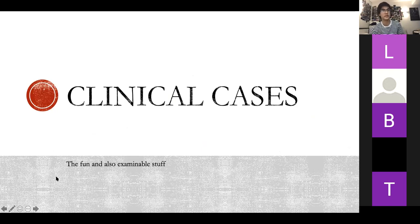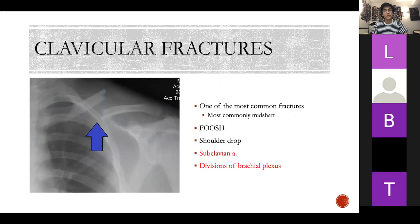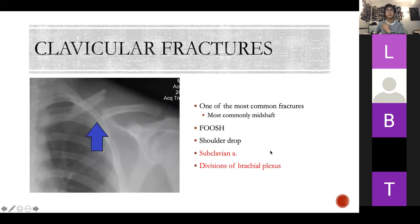Now clinical cases — this is where it feels more like learning medicine. Clavicular fractures: one of the most common fractures in the body, most commonly mid-shaft, and often caused by a fall on an outstretched hand (FOOSH). Your arm may drop because the clavicle supports it. Muscles pull the medial aspect up while the weight pulls the lateral aspect down. You need to worry about your subclavian arteries and the divisions of the brachial plexus. Humeral fractures: surgical neck is the most common, also from FOOSH or a direct blow. Children can get a greenstick fracture.